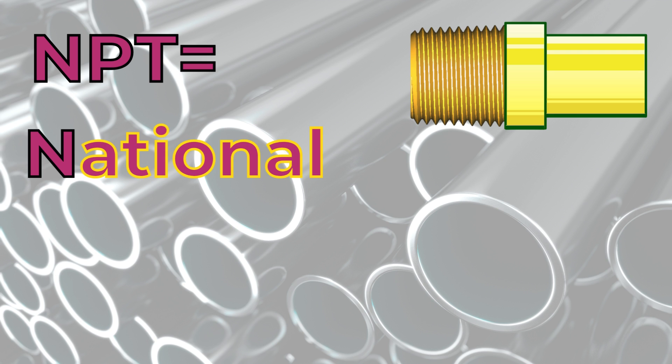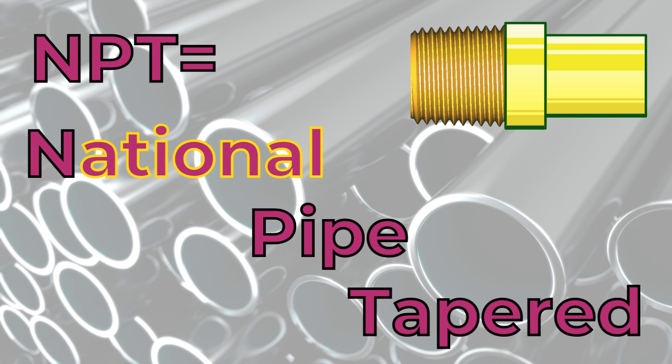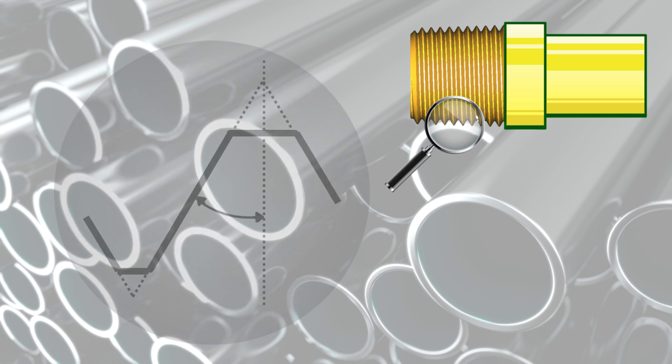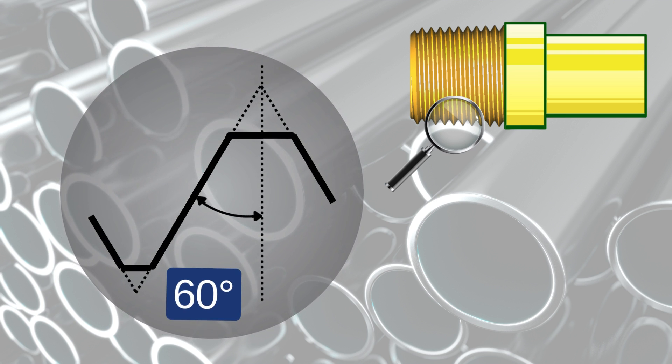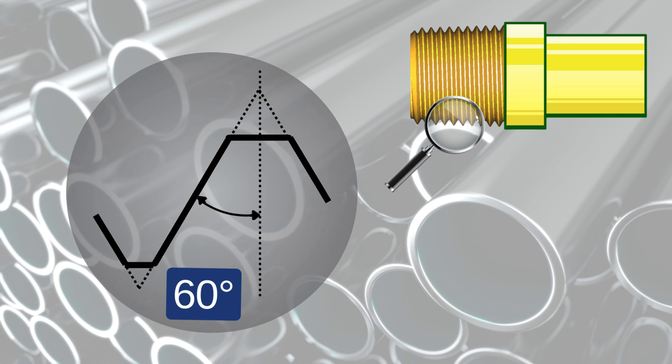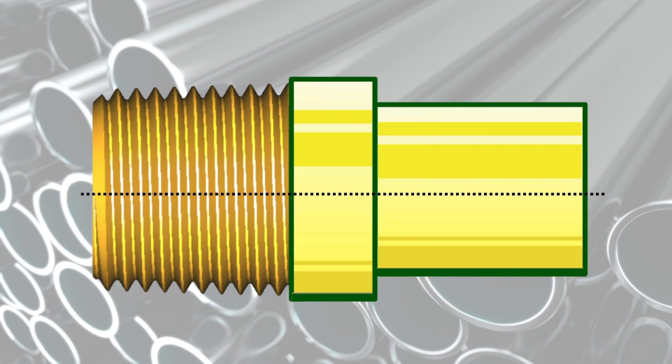NPT stands for National Pipe Tapered. The basic profile is a 60-degree truncated triangle, similar to the UNC profile. The main difference is that the thread profile is tapered at an angle of 1 degree and 47 minutes, relative to the axis.